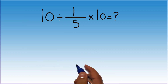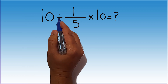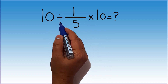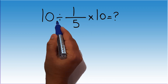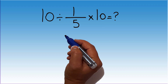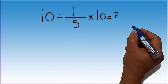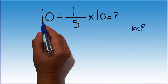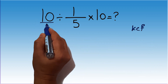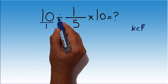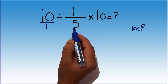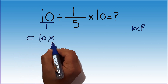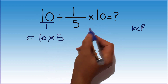Because, according to the order of operations, multiplication and division have equal priority, and we have to move from left to right. In this expression, first we see division, so first we have to handle this division: 10 divided by 1 over 5. According to the KCF rule — K stands for keep, C stands for change, and F stands for flip — keep the first fraction, which is 10 over 1, change division to multiplication, and flip the second fraction. So, we can write 10 times 5, and times 10.